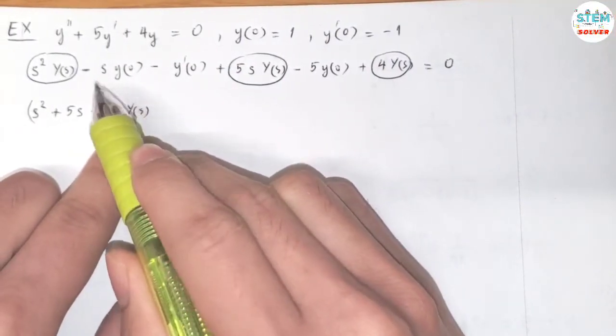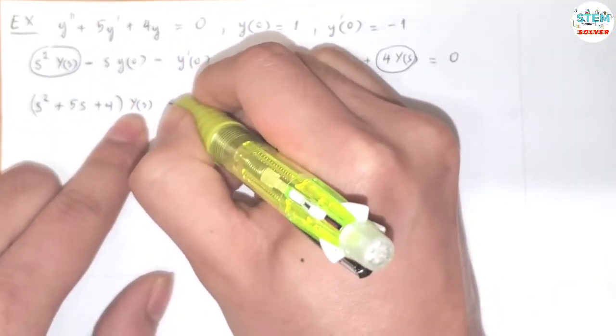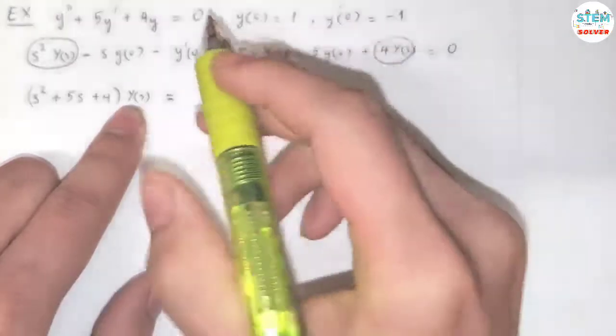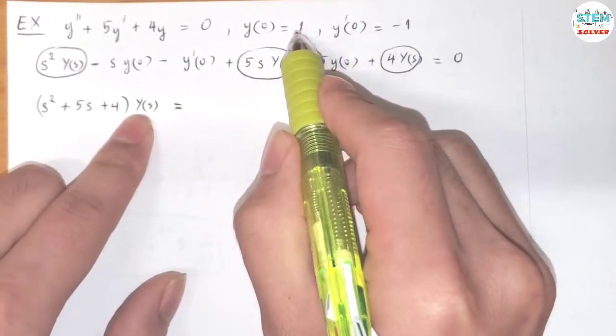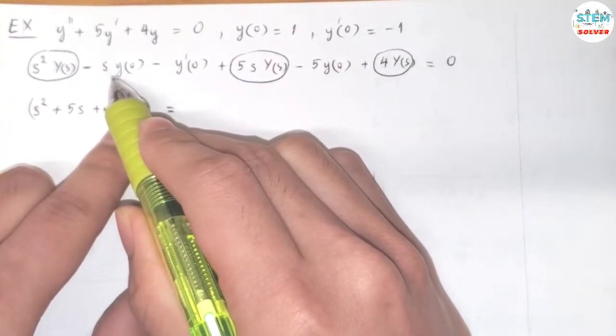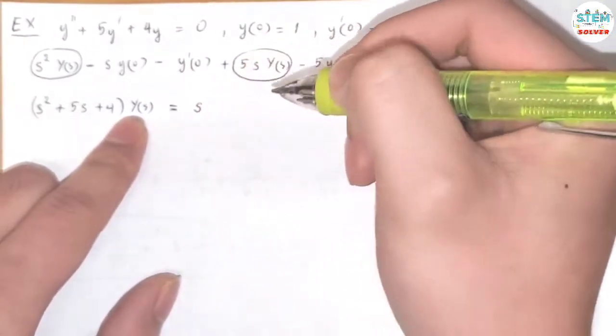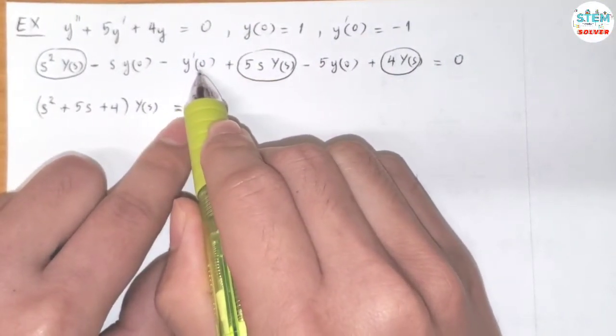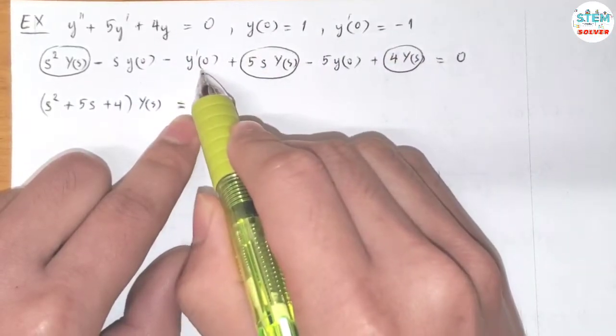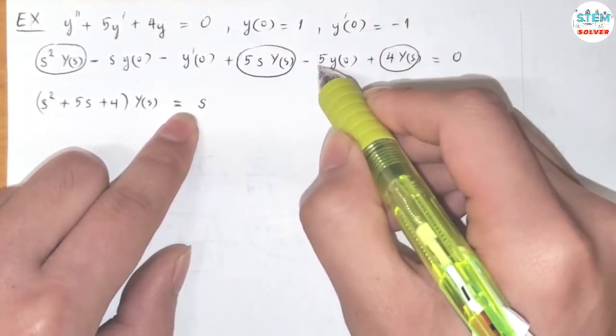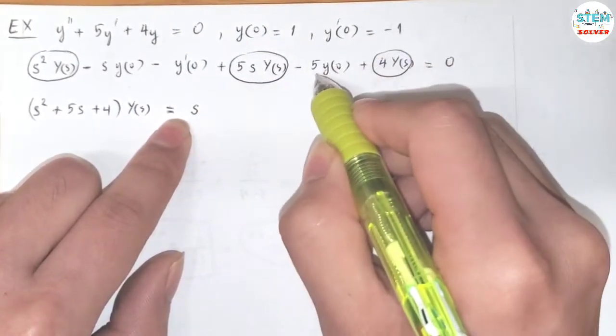Now Y = ... I'm going to move everything else on the other side. Y(0) = 1, so you have -s on this side moving to the other side, which is positive s. Y'(0) = -1, so -Y'(0) = 1. Minus 5 times -1, which is 1.